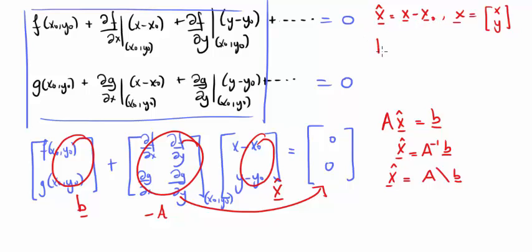We can put b equals f0, where f equals f of xy, g of xy, and the subscript 0 refers to a valuation at x0, y0 again.